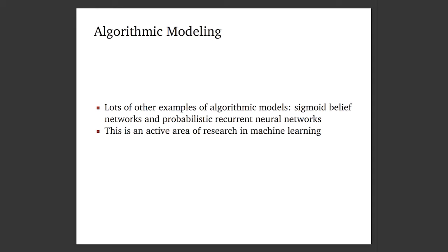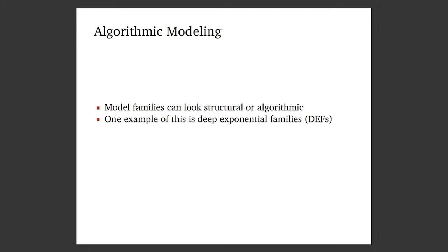There are lots of examples of algorithmic modeling — the sigmoid belief network, which we'll talk about a little bit later, and probabilistic recurrent neural networks for modeling time series. This is an active area of research in machine learning. Model families are not strictly structural or algorithmic. I'm going to describe one that, depending on choices you make, can look like a structural model or a more algorithmic one — called deep exponential families.